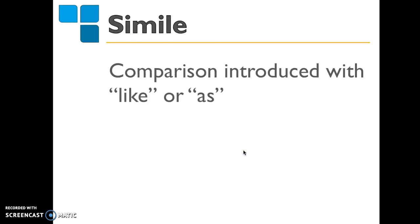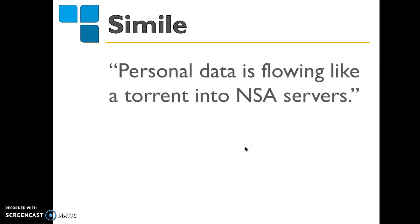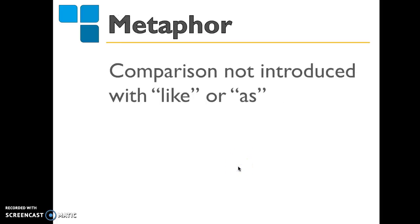A second way to generate imagery is through the use of simile — comparing things using 'like' or 'as.' For example: 'She was as cold as ice.' Another example from your text: 'Personal data is flowing like a torrent into NSA servers.' A third way to generate imagery is through the use of metaphor, an implicit comparison between things that are essentially different but have something in common. These are comparisons not introduced with 'like' or 'as.'